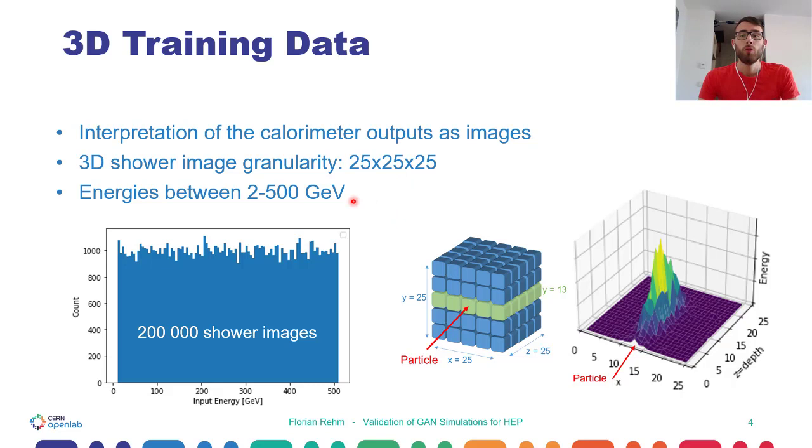Here you can see schematically the 3D space of our calorimeter. The particle enters the calorimeter in the middle of the x- and y-axis. As it is hard to visualize three-dimensional images, I want to show you the green plane as cutout of the 3D space as an example shower image on the right. The primary particle is again entering in the middle of the x-axis, and the shower is evolving in the z-axis or in the depth of the calorimeter.